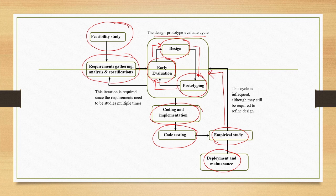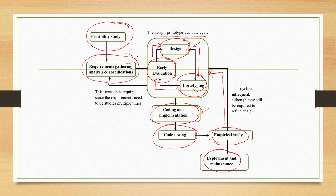At the end of each stage, we generate some output. For the requirement gathering stage, the output is the SRS or software requirement specification document. After the design stage, we get the design document. After prototyping, we get prototype systems. After evaluation, we get evaluation results. After implementation, we get code. After code testing, we get testing documents. After empirical study, we get the usability evaluation document.